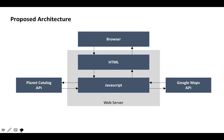As to the proposed architecture for our project, we're currently envisioning two files to reside on our web server: a user-facing HTML file that would be accessed through the web browser, and this HTML file will communicate with the JavaScript file that will leverage both APIs — the Planet Catalog API and the Google Maps API.